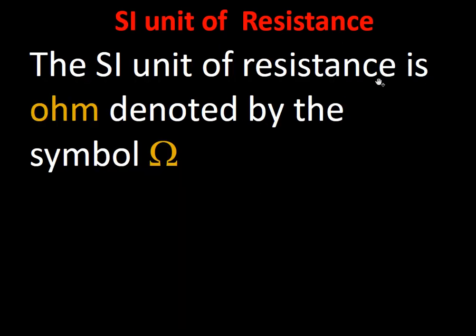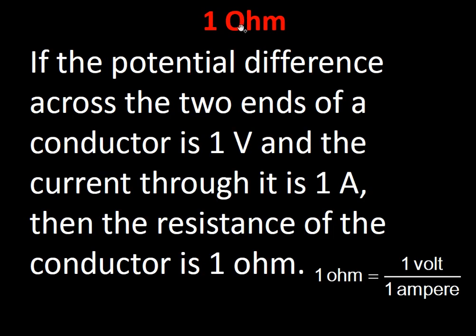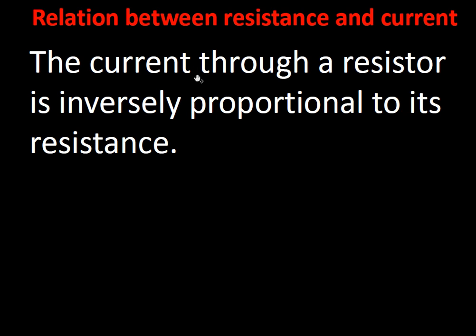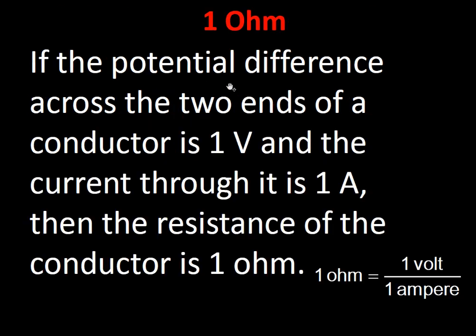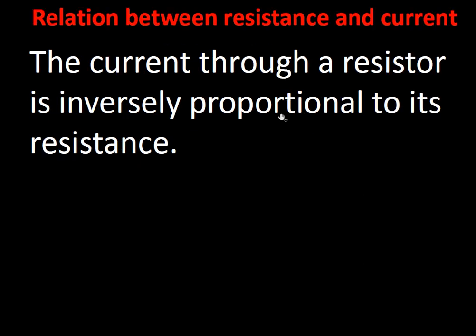The SI unit of resistance is ohm, denoted by the symbol Ω. One ohm is defined as the resistance when a potential difference of 1 volt across a conductor causes a current of 1 ampere to flow — i.e., 1 Ω = 1 V / 1 A. Resistance and current are inversely proportional: if one increases, the other decreases.